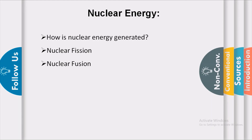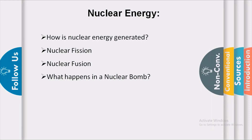In a nuclear bomb, fission of uranium or plutonium takes place at the core, which is embedded in a substance containing deuterium and lithium. When the bomb is detonated, fission takes place and the temperature of the substance reaches 10 to the power of 7 degrees in a few microseconds. This provides the condition for fusion of lighter nuclei to take place, and due to nuclear fusion, a devastating amount of energy is released.